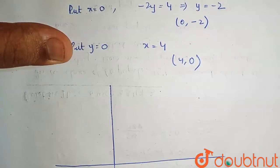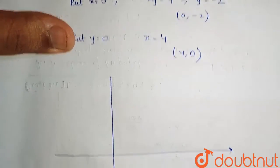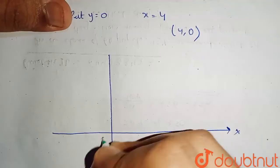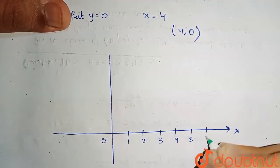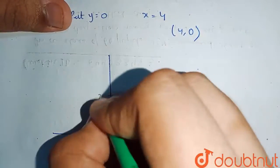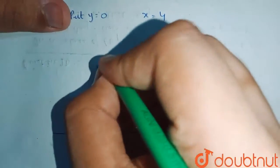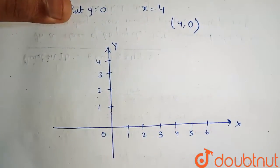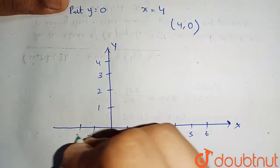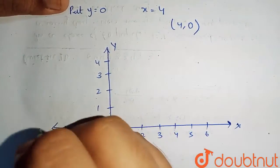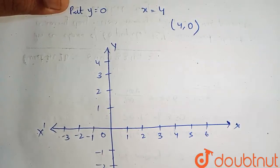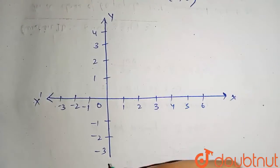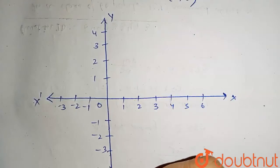So this is our Cartesian plane. This would be x. This is origin. 1, 2, 3, 4, 5, 6. This is 1, 2, 3, 4. This is the y-axis. And this would be minus 1, minus 2, minus 3. This is x-axis. And this would be minus 1, minus 2, minus 3. And this is our y-axis.